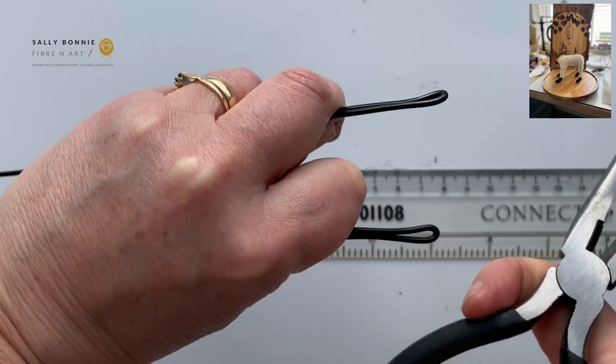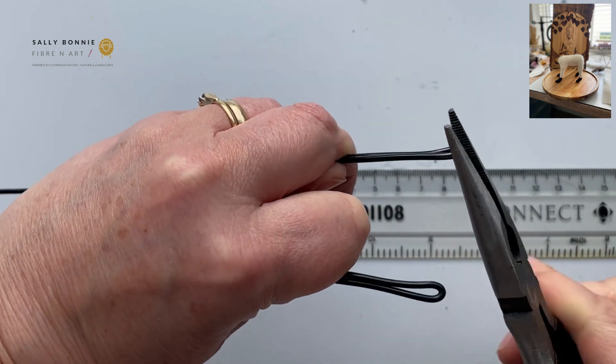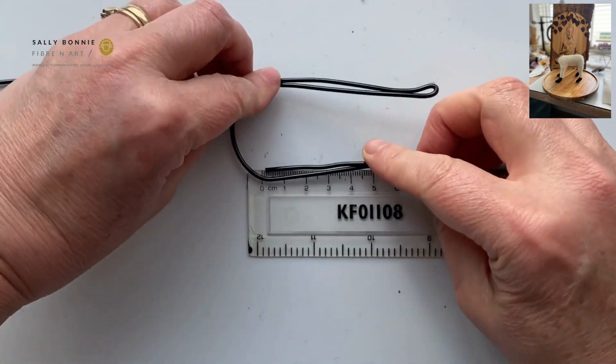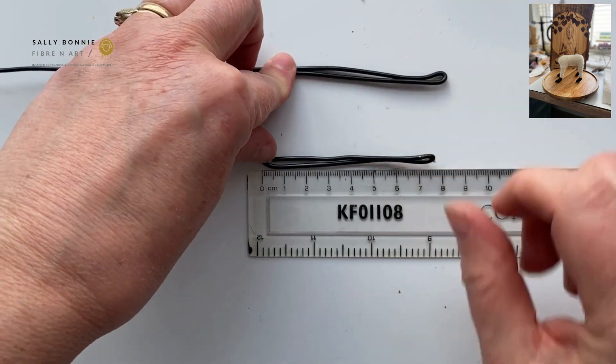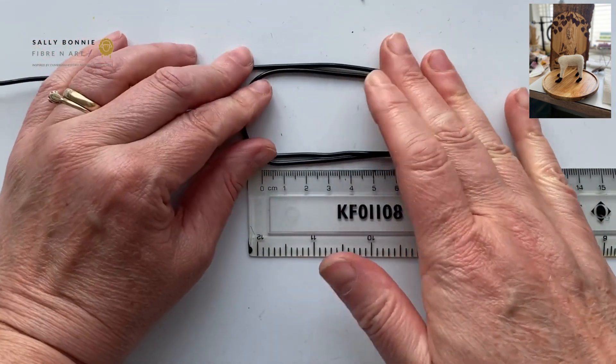I'm going to use my long nose again and just squash that in. You don't have to do it perfect at this stage. We can go back and do some more. So this is our first stage, but we've got two legs. So there you go.